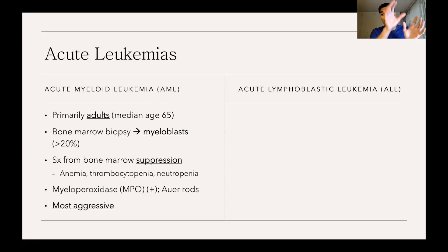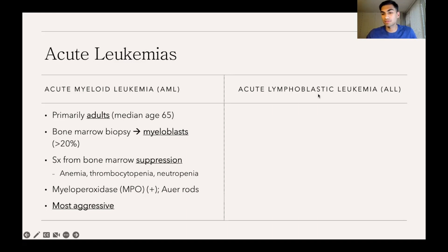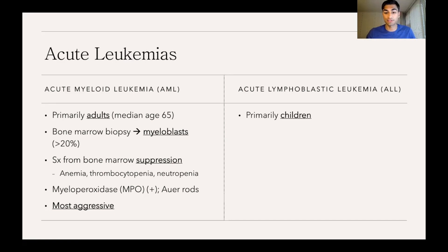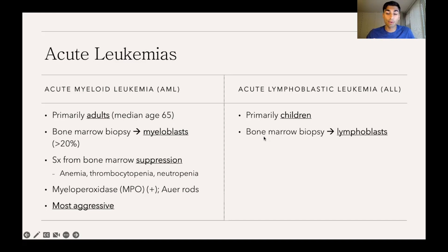Now we move to the other side of the blood cell family tree — still focusing on acute types, but now the lymphoid type: acute lymphoblastic leukemia, or ALL. The terms lymphoblastic and lymphoid are synonymous. ALL primarily occurs in children, as opposed to AML which occurs primarily in adults. On bone marrow biopsy, you'll see primarily lymphoblasts.